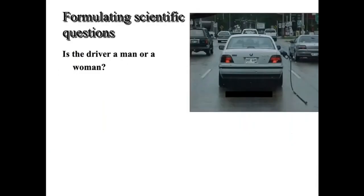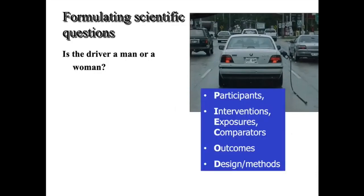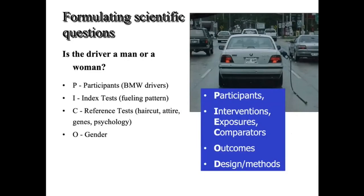Here you see an image: the idea comes — is the driver a man or a woman? I want to convert this into a scientific question. The participants are drivers of this BMW, the competitors are other drivers, and the test is the way they fill petrol in the car. To check gender, I could use a blood sample to check chromosomes, but I could also do psychological tests or examine the attire or hair.